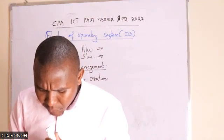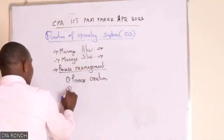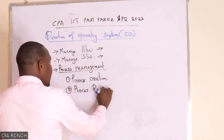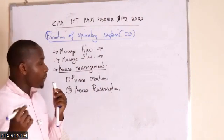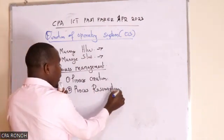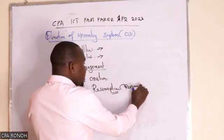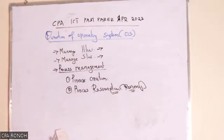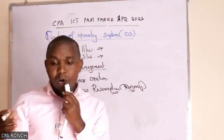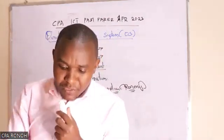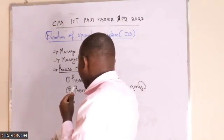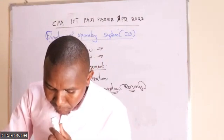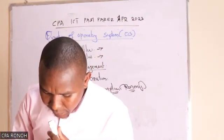Another one is process resumption. Maybe you had closed your computer with a working program still open. When you reopen your computer, this program will still be running. It will ask you: do you want to restore the previous window? If you restore it, it will open your working apps. So if you closed your computer without closing those apps and come back the next day, the OS will do what is called process resumption — it will arrange those ongoing processes.